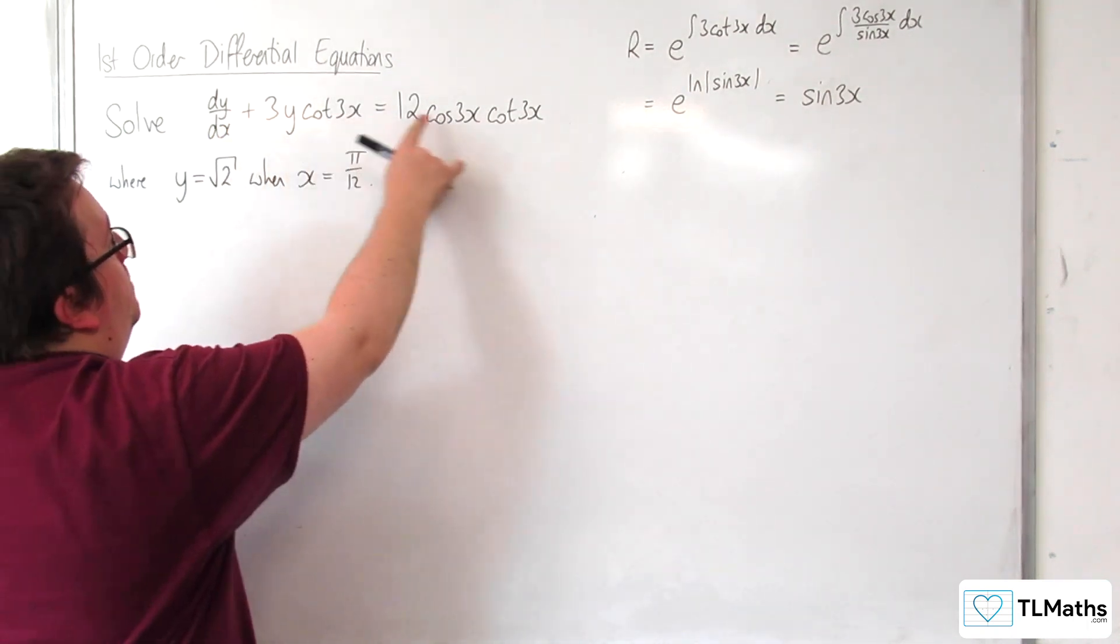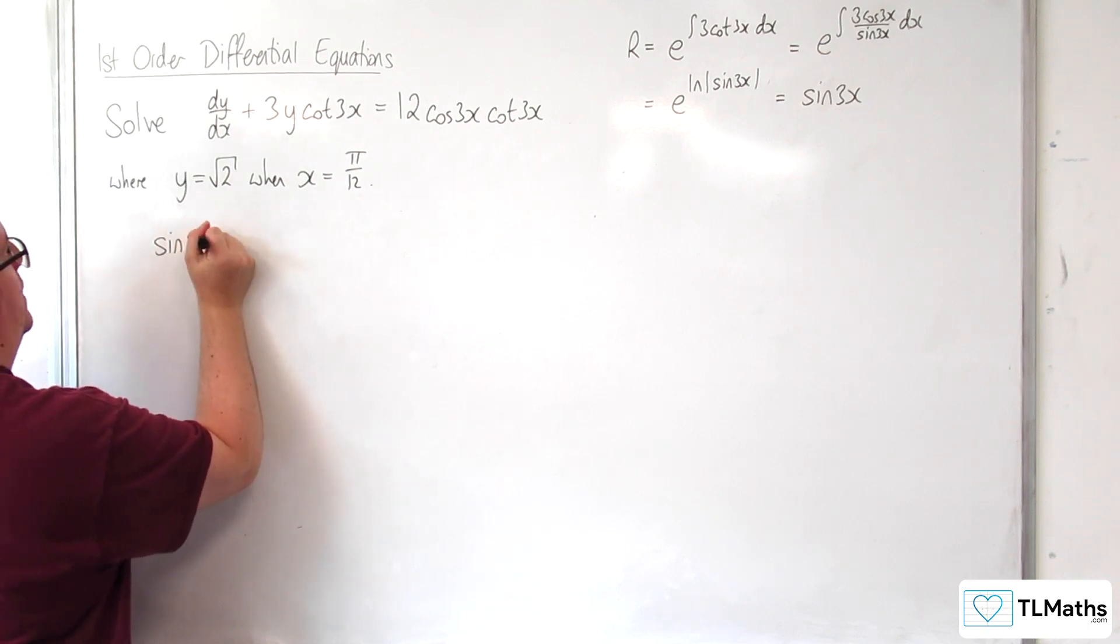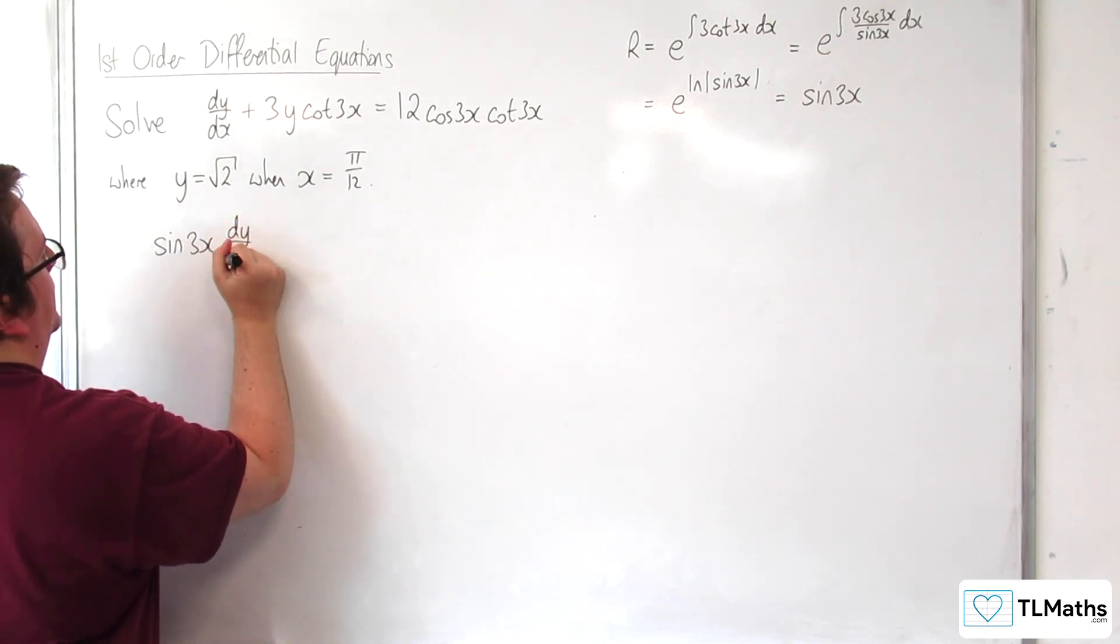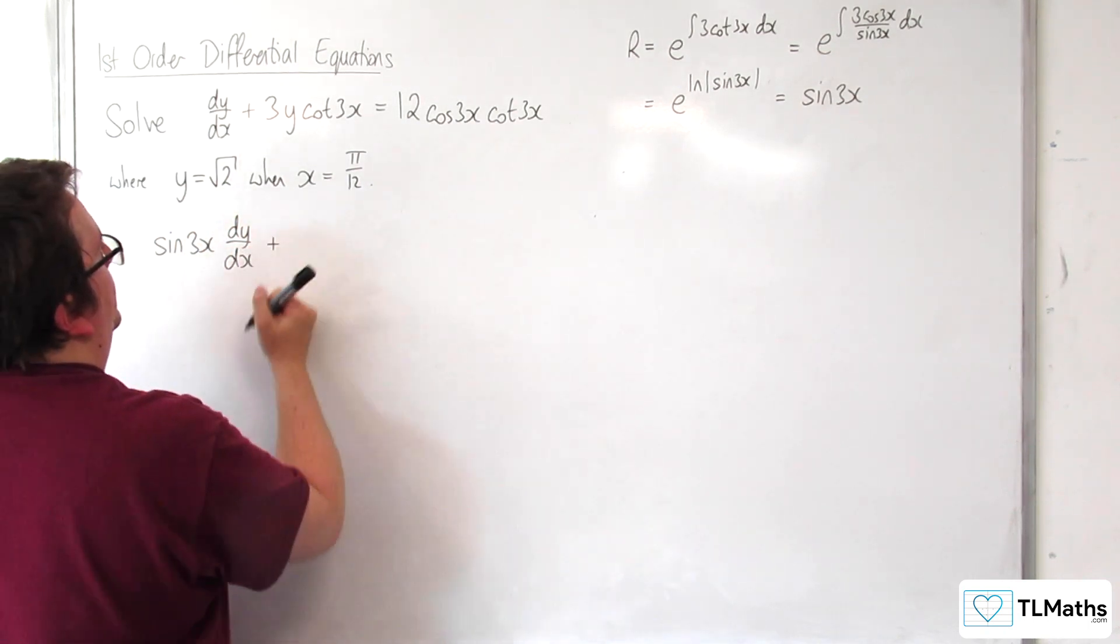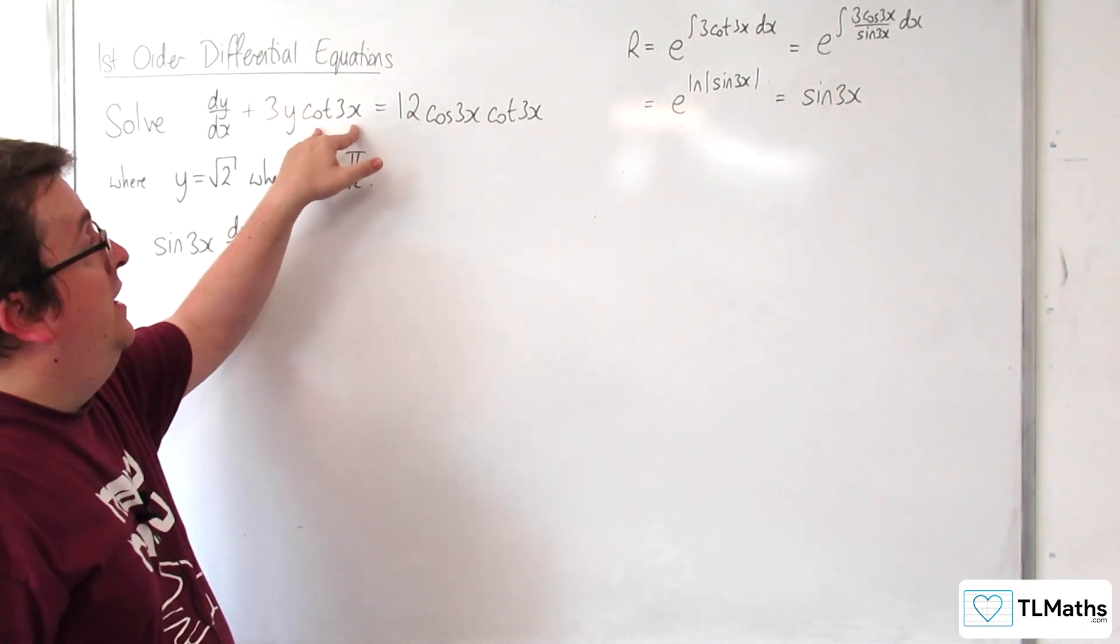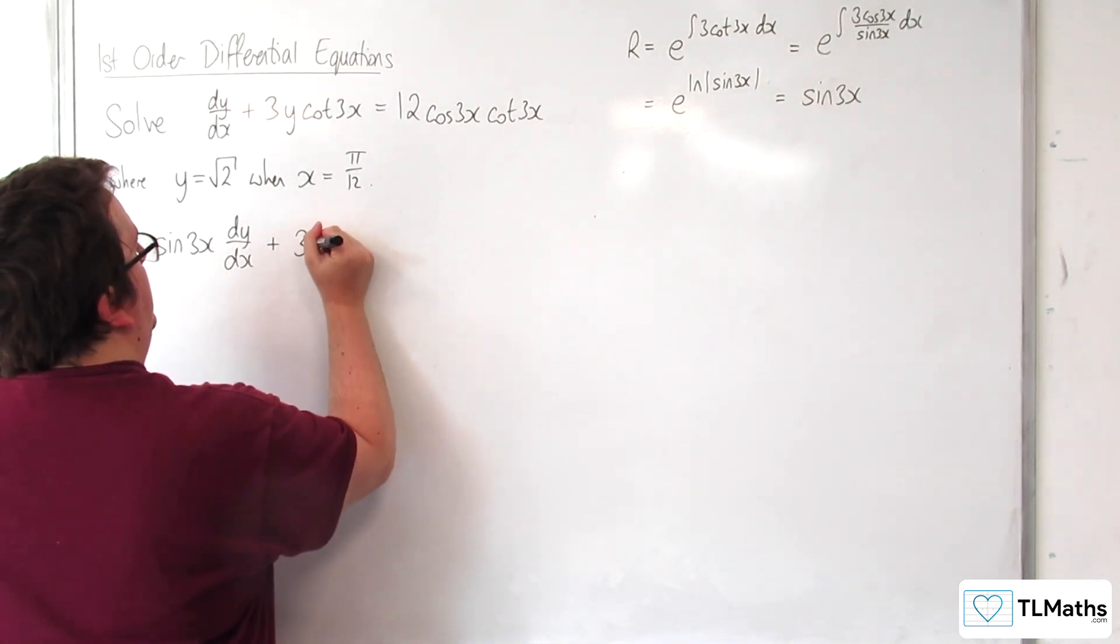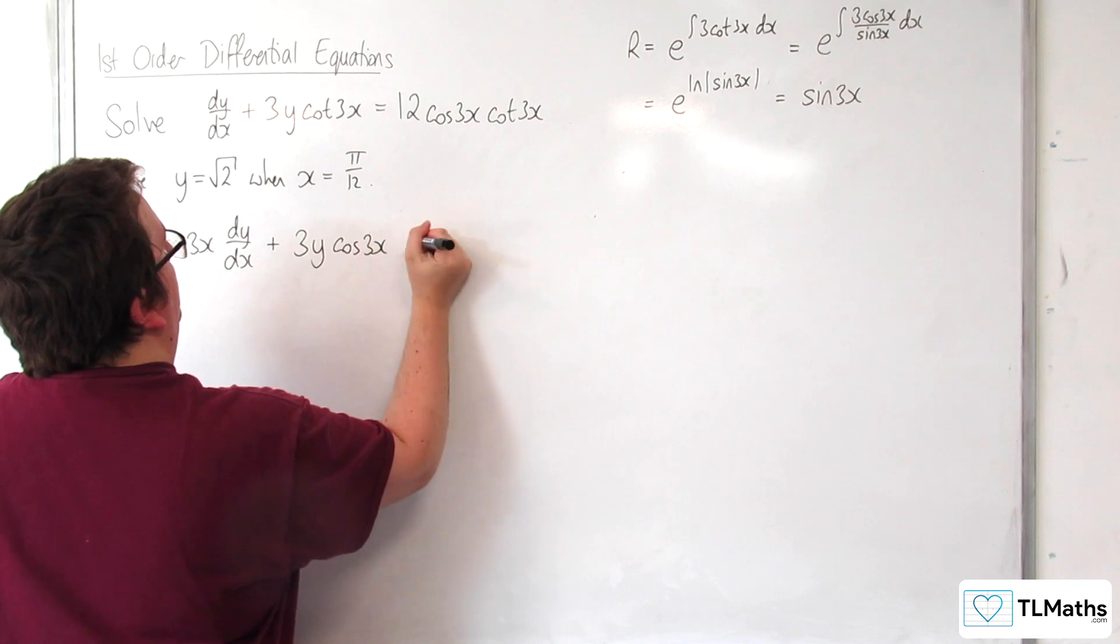I'm going to multiply through by sine of 3x. We would get sine 3x dy by dx plus, now cot of 3x times sine of 3x will just be cosine of 3x, so 3y cosine 3x.